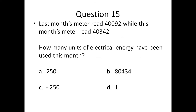Question fifteen: last month's meter read 40092, while this month's meter read 40342. How many units of electrical energy have been used this month? A) 250, B) 80434, C) negative 250, or D) 1.